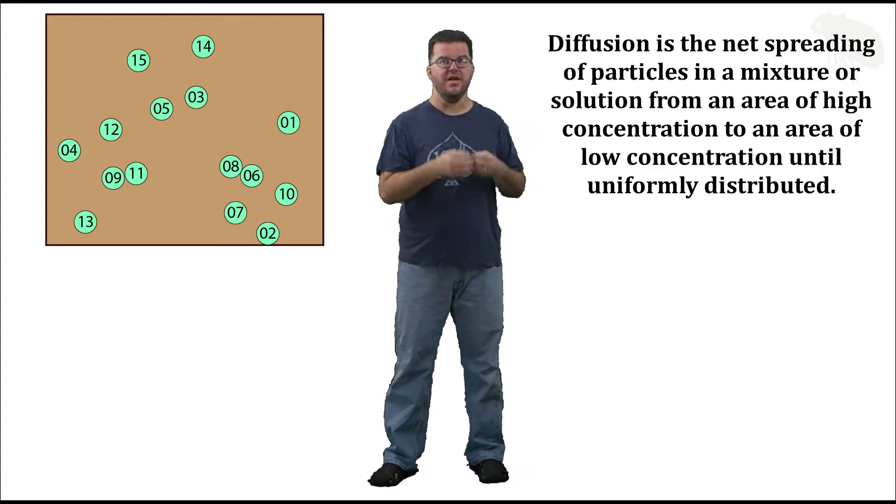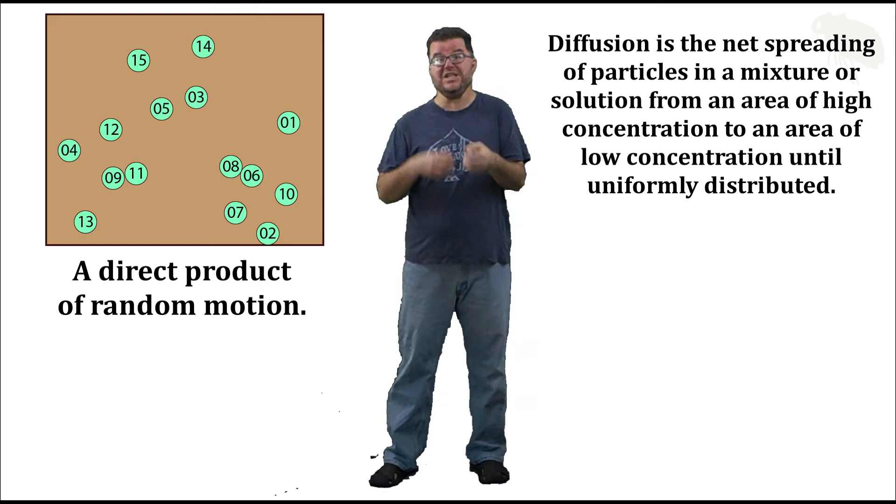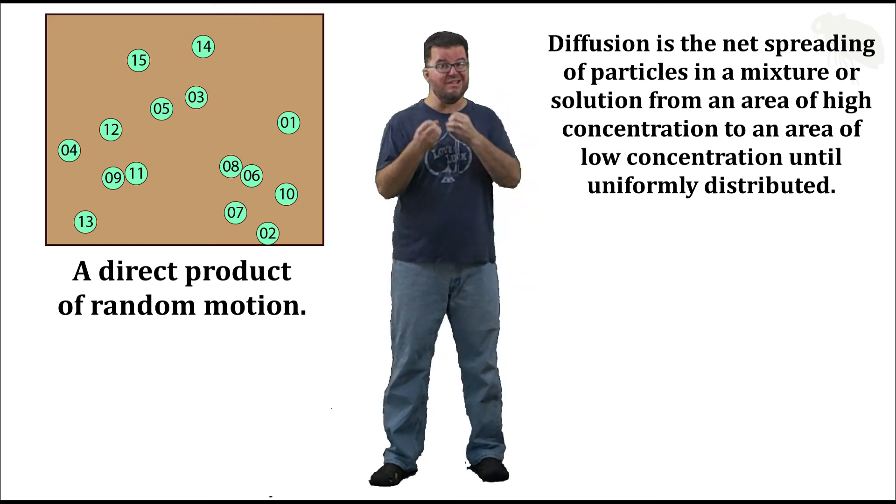It's not directional, it's net. We've seen a net movement from high to low, and it's produced from random motion. This is simply what particles do left to themselves, and that's key. Now, the other thing to realize though with diffusion is it's distinctly distance limited.